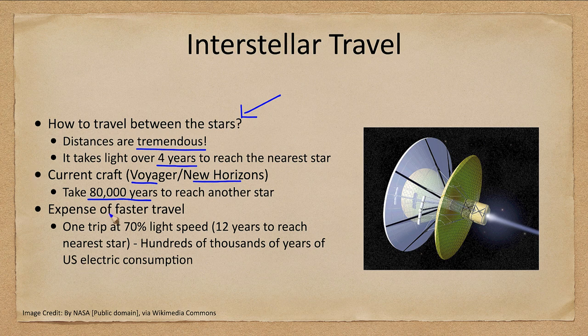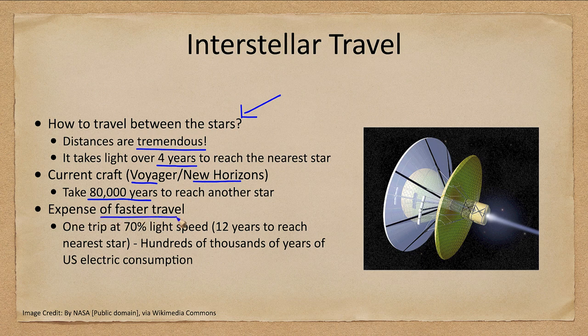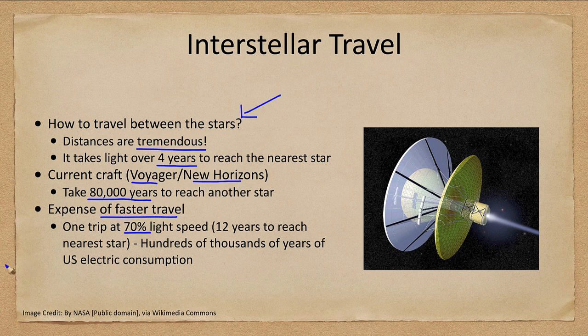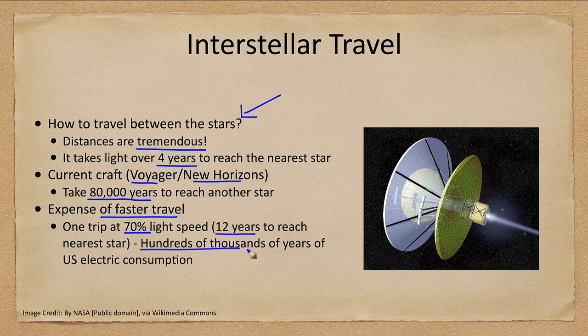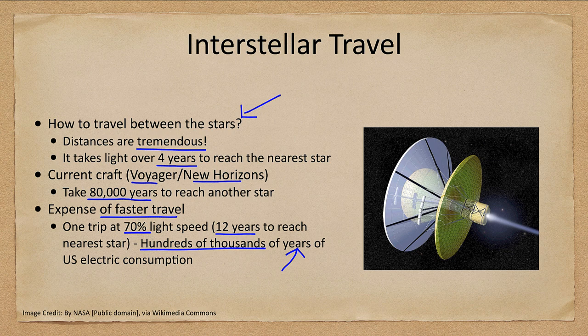There's also an expense of faster travel. It takes a lot of energy. If we made one trip at 70 percent of the speed of light, which is way beyond our technology right now, it would take 12 years to reach the nearest star. However that would cost the equivalent in energy of hundreds of thousands of years of electric consumption for the United States. So that's how much energy it would take. So we need other ways to try to communicate because the travel just is not feasible.